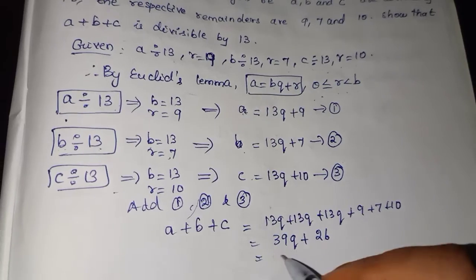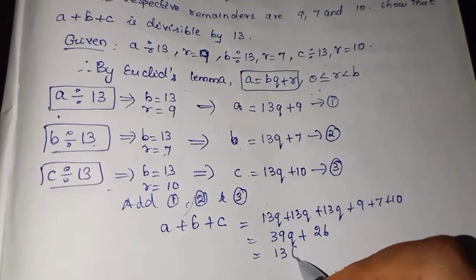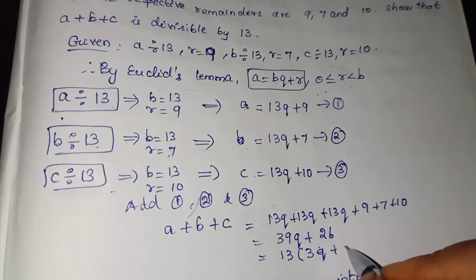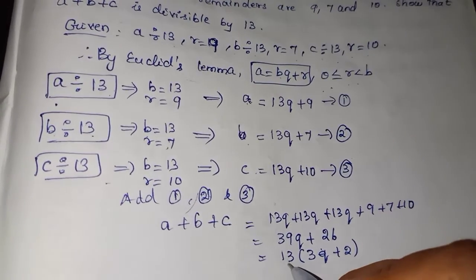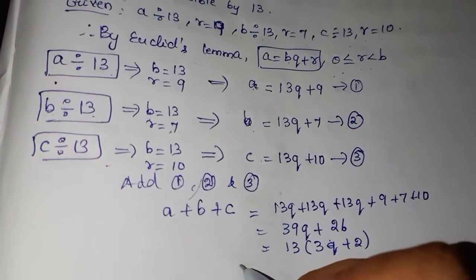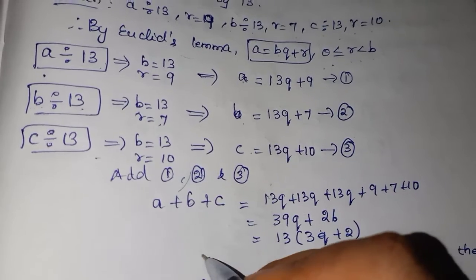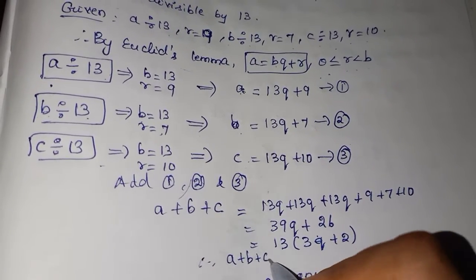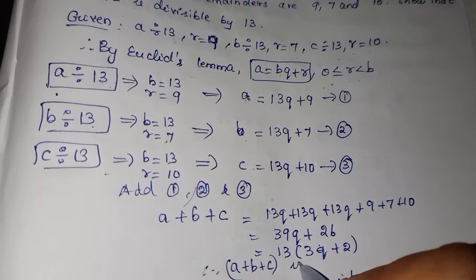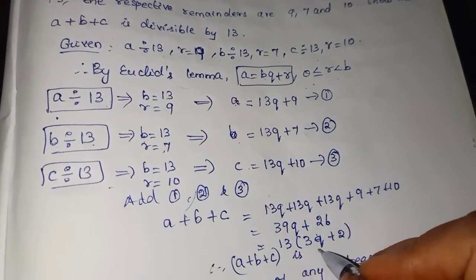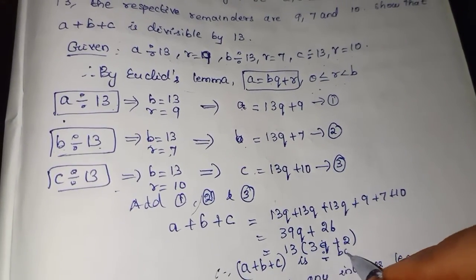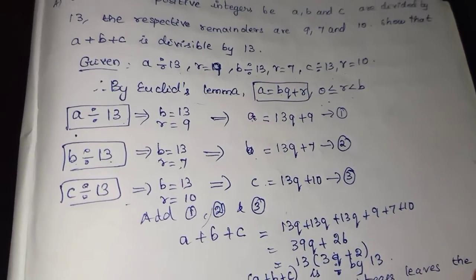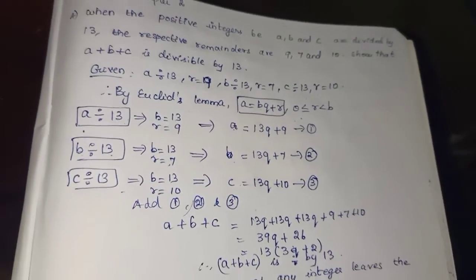Here, 13 is common: we take 13 out to get 13 times (3Q plus 2). So 13 is a factor, which means A plus B plus C is divisible by 13. Therefore, A plus B plus C is divisible by 13 — proved. You can easily do this sum.